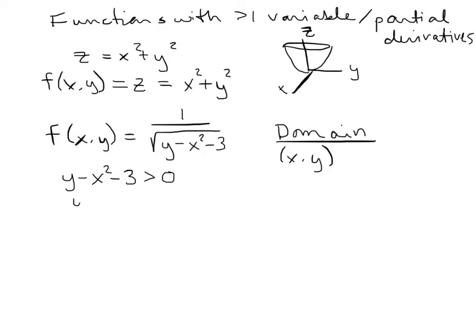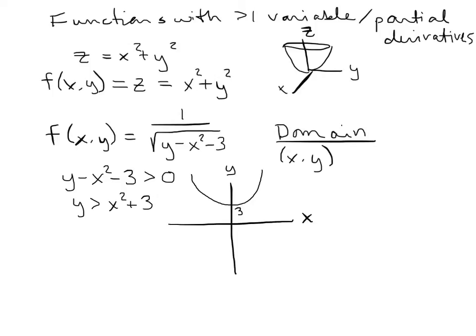I'm going to rearrange this by bringing x squared and 3 to the other side. Now I can graph this on just the xy-plane since it has only x's and y's. x squared is a parabola, and plus 3 raises the parabola up by 3. The question is: are we looking at the x's and y's inside the parabola or outside the parabola?